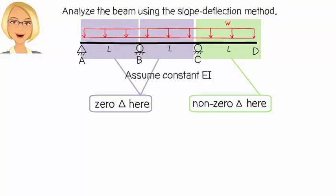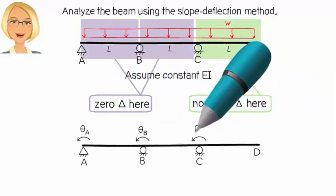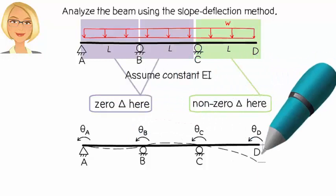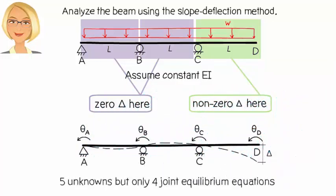Observation 2: There is a total of four unknown rotations, one at each joint of the structure. There is also an unknown vertical displacement at joint D. So, we have a total of five unknowns. But since the beam has four joints, we can write only four joint equilibrium equations. Therefore, we are one equation short for determining the unknowns. This happens whenever we get a non-zero delta in our equations. But not to worry. As you will see shortly, we can use our basic knowledge of static equilibrium to come up with an additional equation.